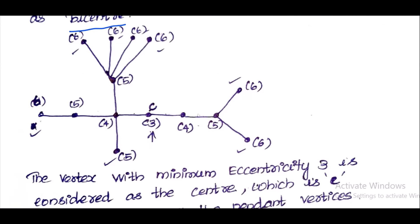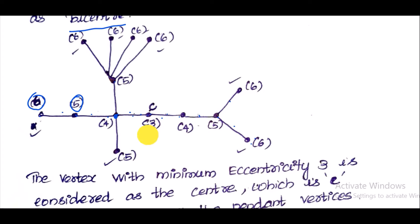For this example graph, the maximum distance for one vertex step is 1, 2, 3, 4, 5, 6 — maximum distance is 6. For another vertex, steps are 1, 2, 3, 4, 5 — maximum distance is 5. For yet another: 1, 2, 3, 4 — eccentricity is 4. Another vertex: steps 1, 2, 3 — eccentricity is 3.